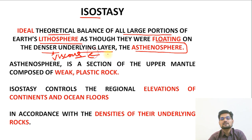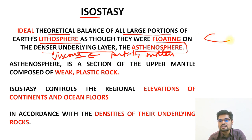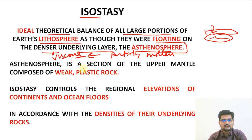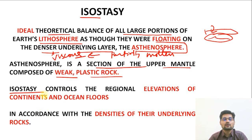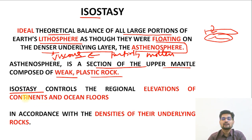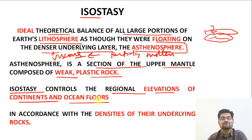Isostasy is the ideal theoretical balance of all large portions of the earth's lithosphere as though they were floating on the denser underlying layer — the asthenosphere — which is viscous and partially molten. Because the asthenosphere is partially molten, the upper layer tends to float and move on it. The importance of isostasy as a theoretical phenomenon is that it controls the regional elevations of the continents and ocean floors.